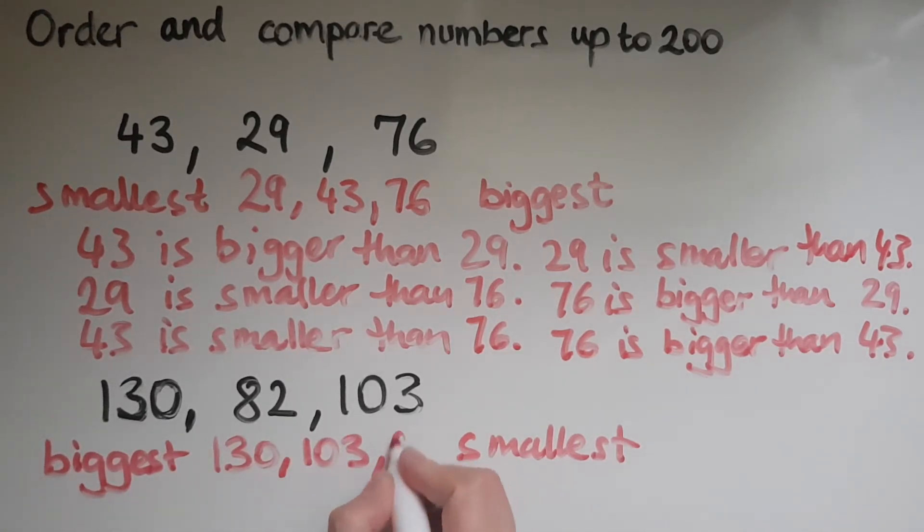Then would come one hundred and three. And finally, eighty two. That's the smallest one.